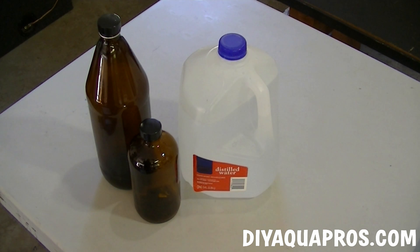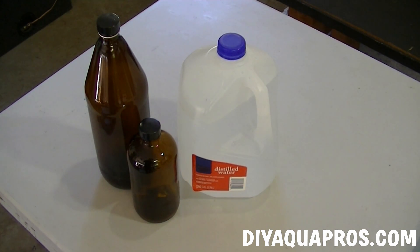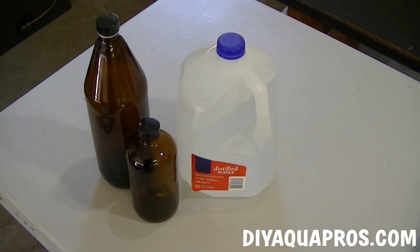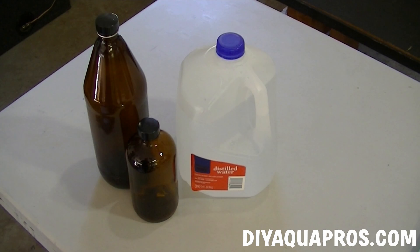For this project, you'll need a gallon of distilled water and some type of bottle to serve as the container for your fertilizer solution. You're free to use any size and shape of bottle you want. It'll only change one calculation, which we'll make later in the video. Just make sure that it has a cap.